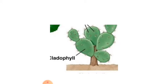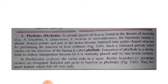A petiole or rachis which carries out the function of the lamina is called a phyllode. Phyllode formation is a mechanism to reduce transpiration because it is vertically placed and has very few stomata, thus reducing the rate of transpiration.